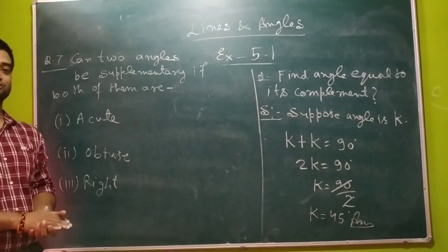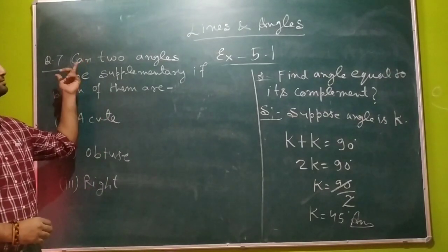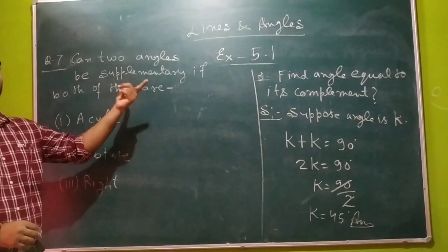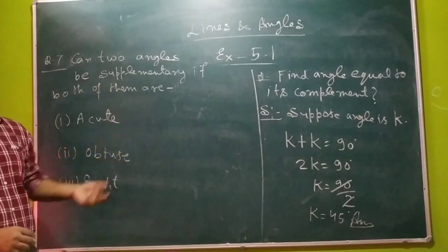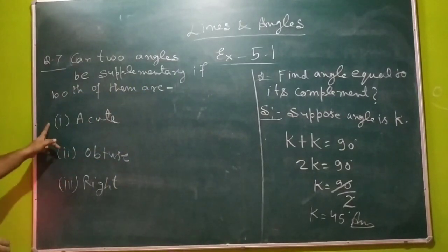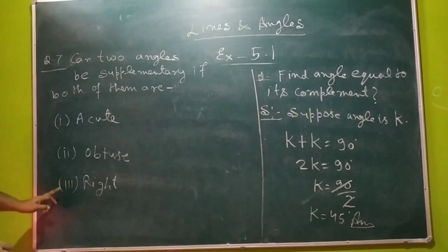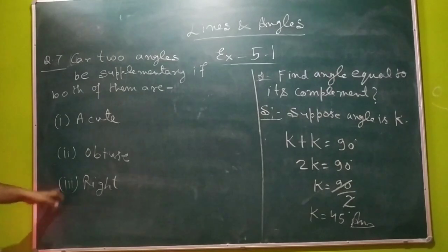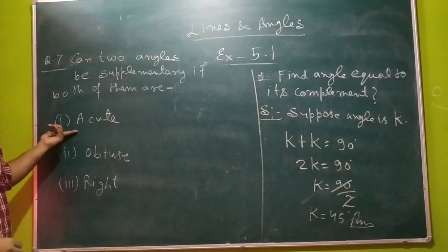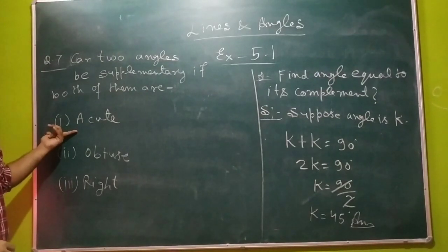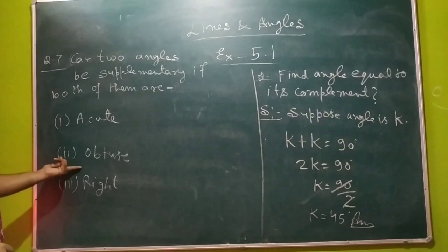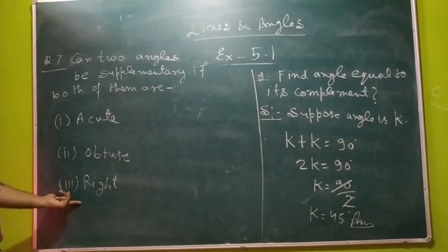Now let's come to the 7th question. The 7th question is asking: can 2 angles be supplementary if both of them are acute angles, if both are obtuse angles, or if both are right angles? Here are 3 cases and we have to find out whether 2 acute angles can be supplementary, whether 2 obtuse angles can be supplementary, and whether 2 right angles can be supplementary.